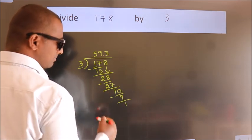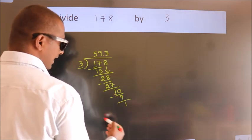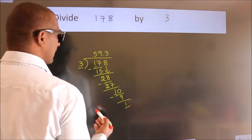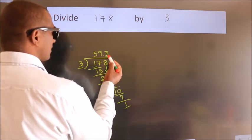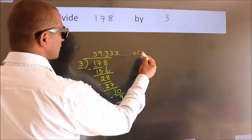Now you observe. We had 1 here, and we got 1 again. That means this number keeps on repeating. So this is our quotient.